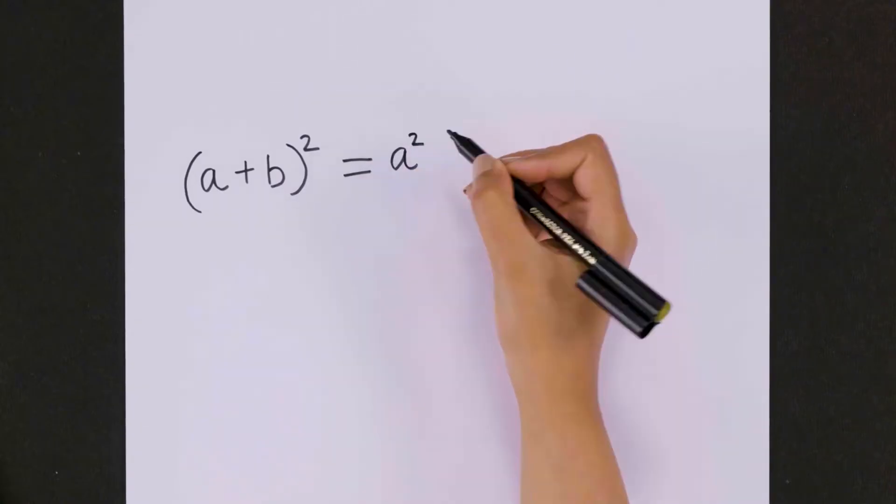What is a plus b whole squared? It is a well-known identity that equates to a squared plus 2ab plus b squared. It is especially useful for finding squares of numbers quickly.